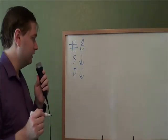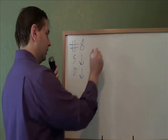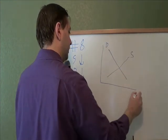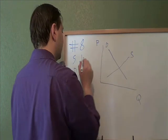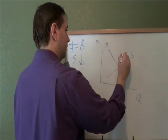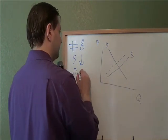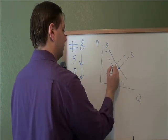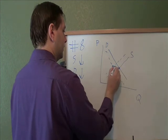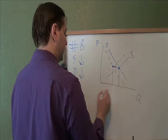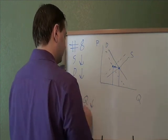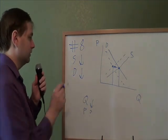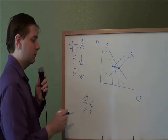Problem number eight: what happens when supply decreases and demand also decreases? Like all these problems, we start by making our demand-supply chart with demand, supply, quantity, and price. A decrease in supply is a movement to the left, and a decrease in demand is also a movement to the left. We've gone from the old equilibrium to the new one — that's a leftward movement, so quantity has decreased. The price we can't be sure about; it depends on exactly how big those movements in supply and demand are. So when supply decreases and demand decreases, your quantity goes down and the price is indeterminate.